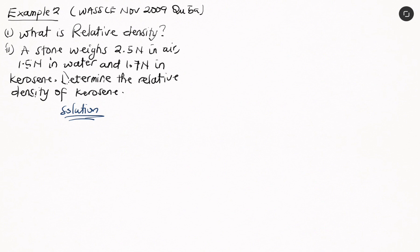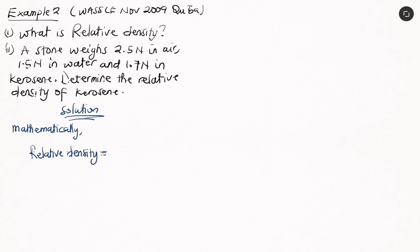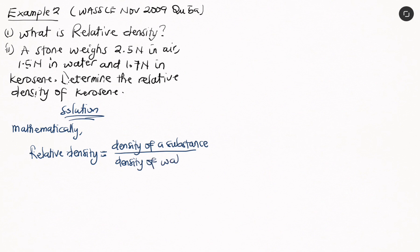Now, relative density can be defined mathematically as the ratio of the density of a substance to the density of water. That is our answer for part I.